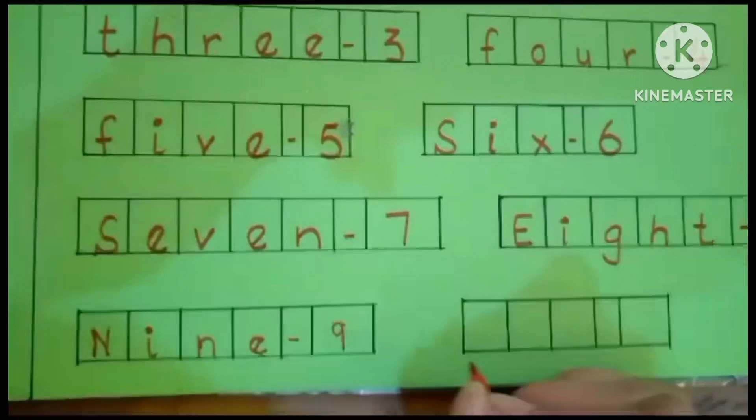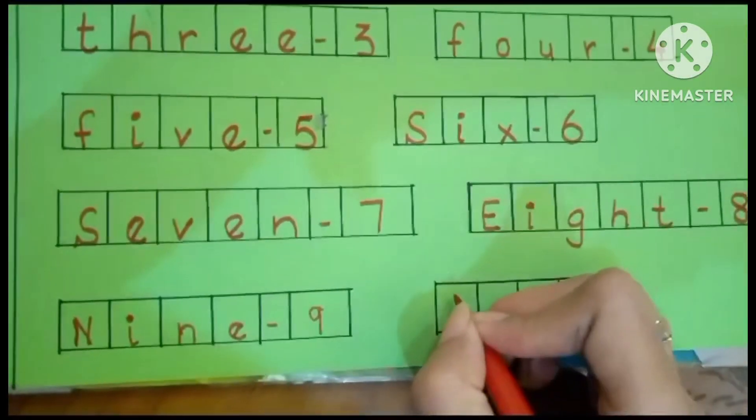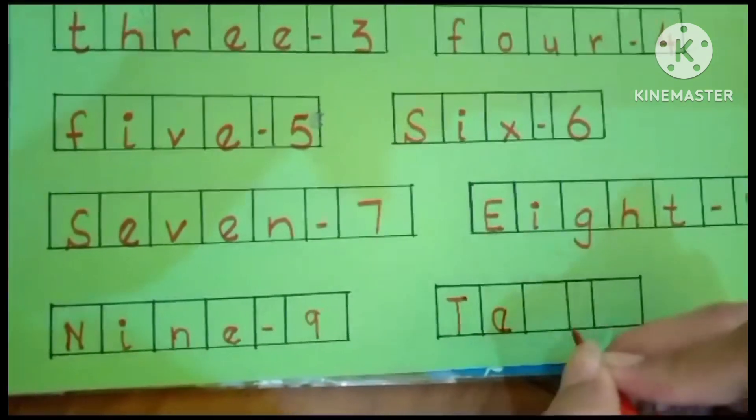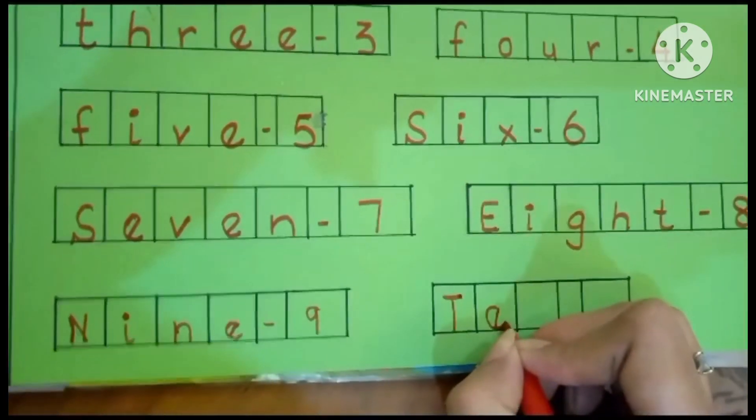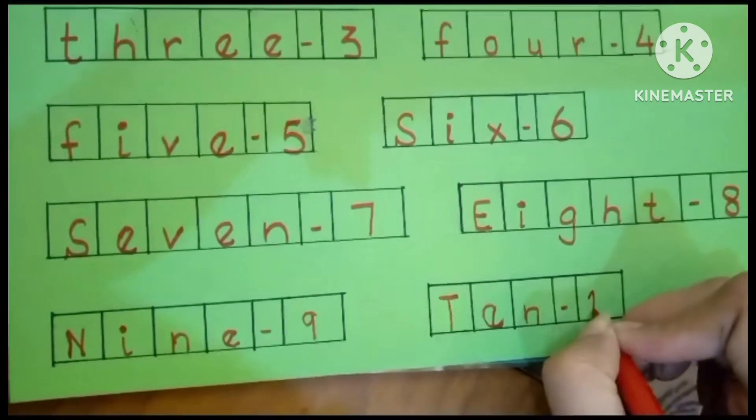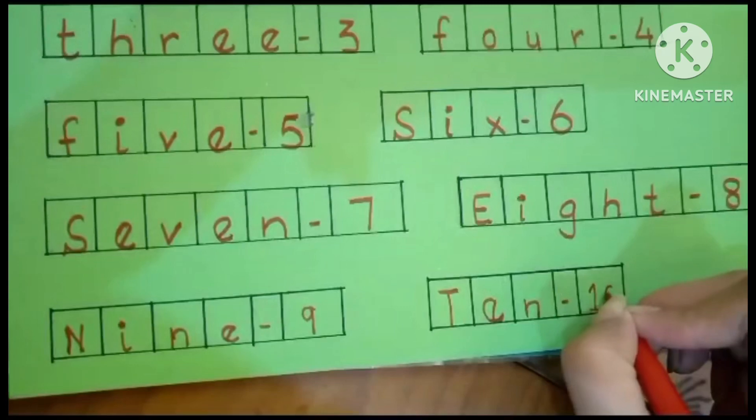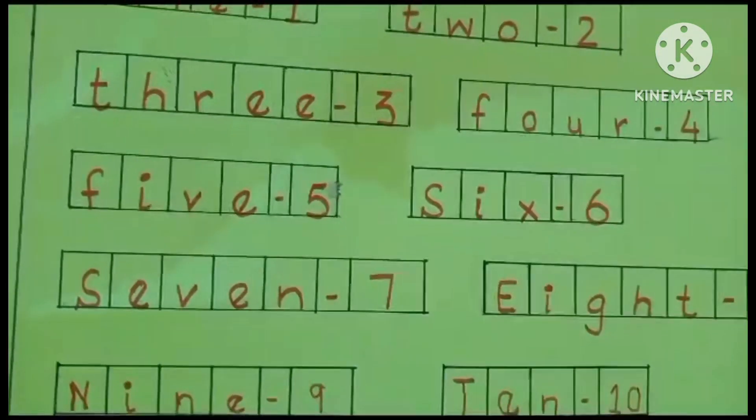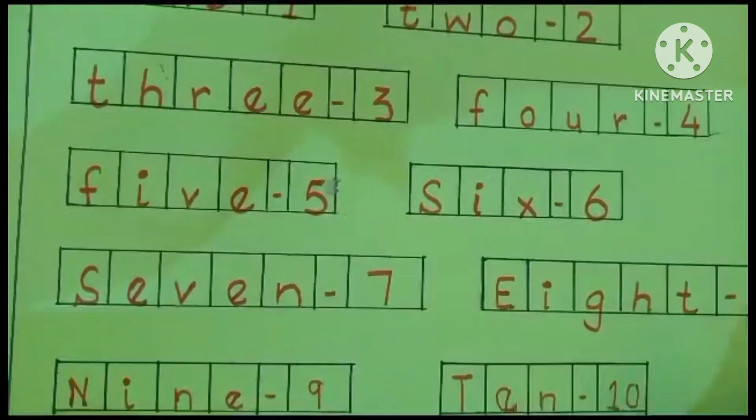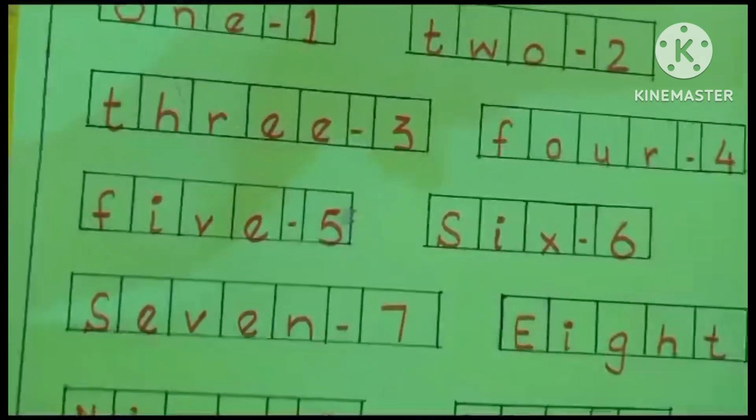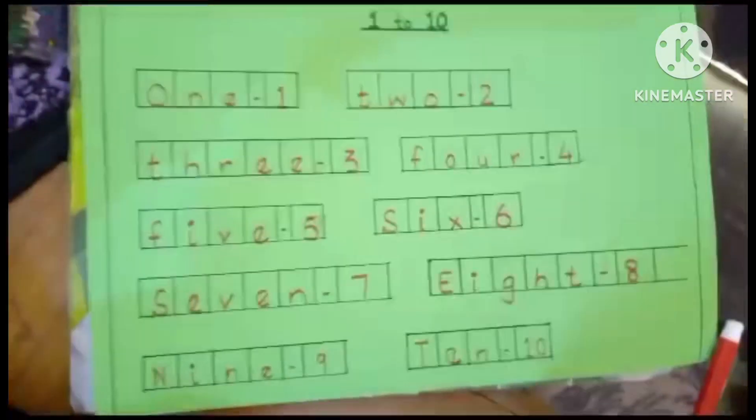Now ten: T-E-N, ten. So these are the zero to ten numbers in words. Now it's your turn to write numbers in words from zero to ten. It's so easy. Look, now I'm reading it again.